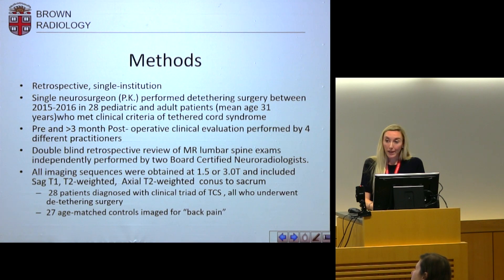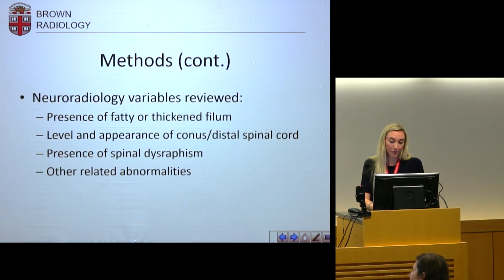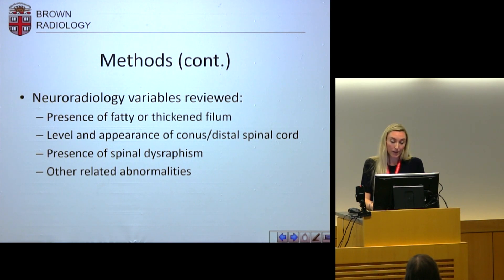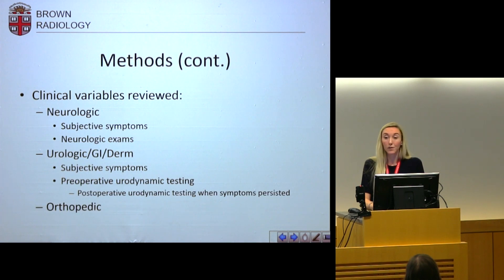These patients received pre- and post-operative clinical evaluations by four different practitioners within the Department of Neurosurgery. They were compared to age-matched controls — one of whom we had to exclude for inadequate imaging — and these age-matched controls received imaging for back pain. We reviewed the presence of a fatty or thickened filum, the level and appearance of the conus and distal spinal cord — whether it had normal or abnormal morphology — the presence of spinal dysraphism or other bony abnormalities, and any other related abnormalities. We also reviewed the clinical variables with respect to the clinical triad, as Dr. Klinga discussed.